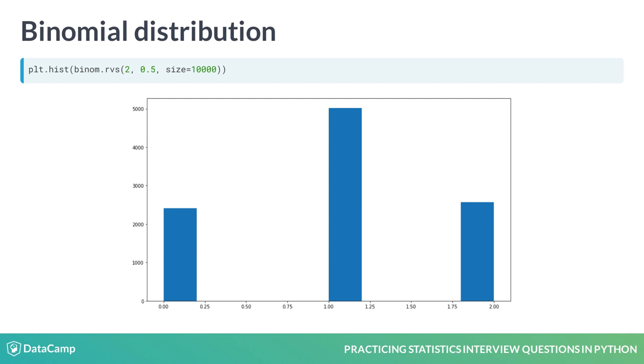Here we see the results of a sample representing the number of heads in two consecutive coin flips using a fair coin, taking the form of a binomial distribution.